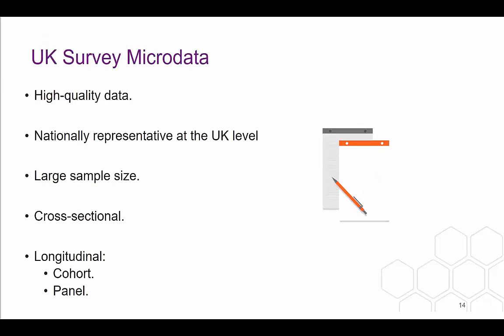Some of the most commonly used micro data are UK surveys. The surveys are produced by experienced research organisations such as the ONS and the National Centre for Social Research, who have had many years of experience in sampling, data collection and analyses. They have their own methodologists, researchers and teams of interviewers, so they are very high quality data. These surveys are mostly nationally representative at the UK level, or at the level of the countries within the UK depending on the particular survey, and they also tend to have large sample sizes — for example, the Labour Force Survey interviews 60,000 people every quarter. There are two main types of surveys: cross-sectional and longitudinal. Longitudinal surveys can be broken down into cohort and panel studies as well.